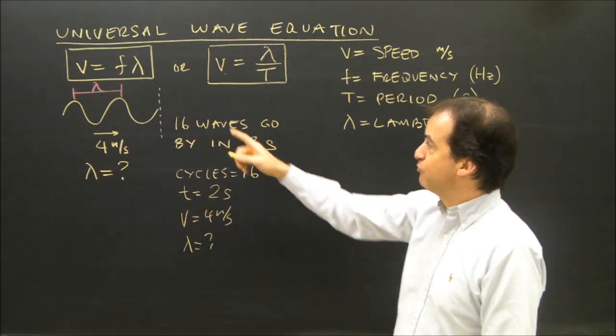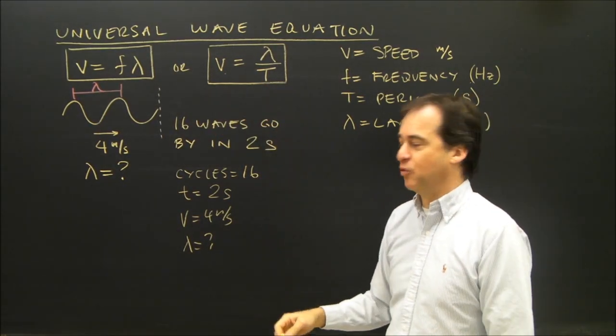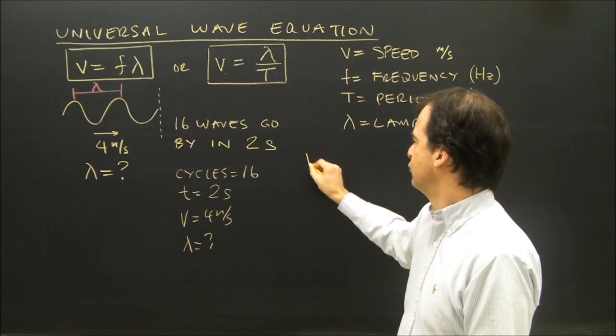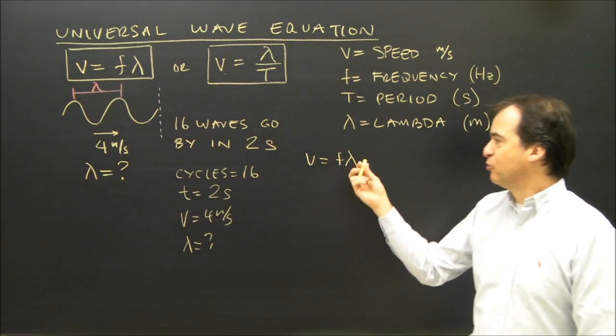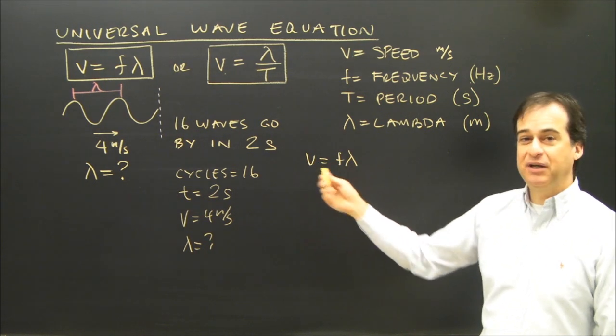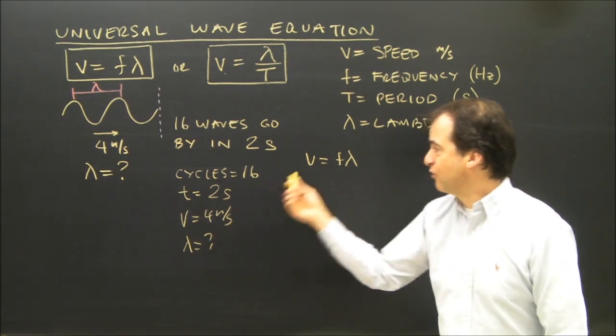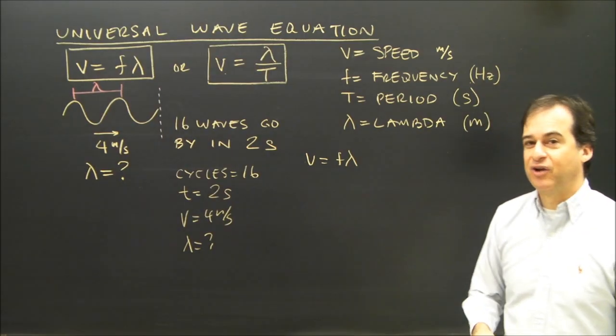So I look at this and I think, okay, I've got a formula V equals F lambda or V equals lambda over T. I decide I'm going to use V equals F lambda. I want to know the wavelength. I need the velocity or speed, and I need the frequency. Well, I've got V, so I've got this number. It's a frequency I don't have.